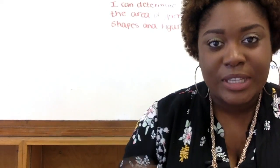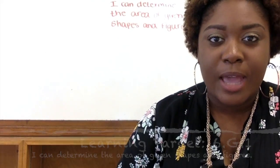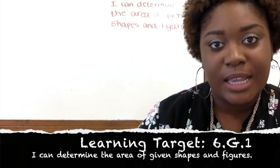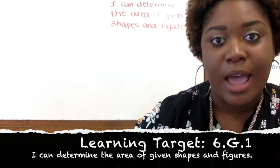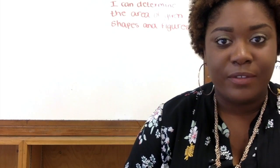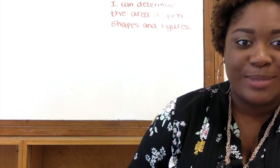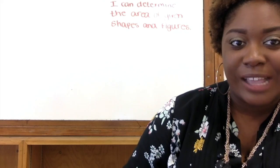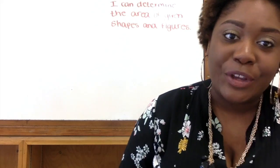Welcome to the flip video for today. As you can see, the learning target is behind us — it is 6.G.1: I can determine the area of given shapes and figures. From the learning target, you should know that we are now moving on to our geometry unit.